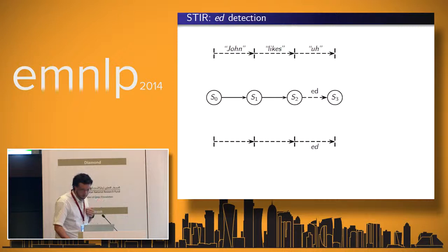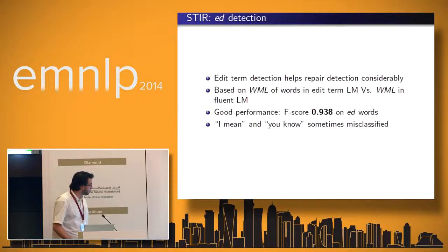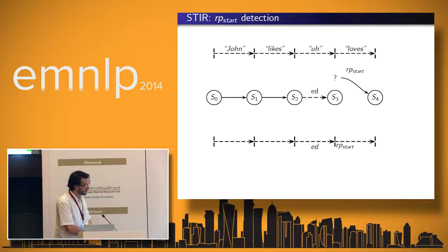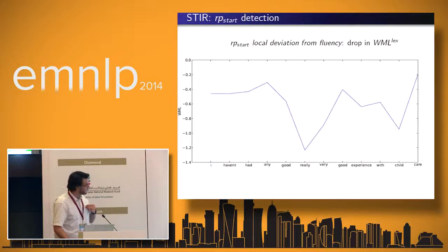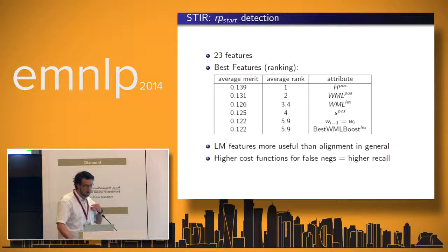The edit term detector uses the weighted mean log probability measure of words in the edit term language model versus their WML in the fluent language model — quite simple features. Using just this, it does very well, achieving 0.938 on all edit term words. The main classifier we need to be concerned with is the repair start detector, because the more accurate this is, the better input the rest of the pipeline has. You get this dip in enriched probability measures at repair starts, and feature ranking shows that language model features are actually more useful than alignment ones in general.